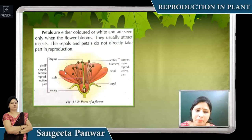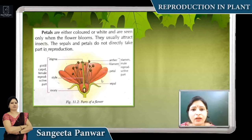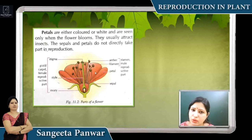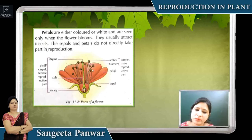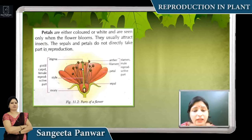Some other parts are known as sepals and petals. Sepals are the green colored portions. Petals are the colorful portions that usually attract insects. If all four parts — sepals, petals, stamen, and pistil — are present in one flower, it is called a complete flower. If sepals are absent or only one of male or female is present, it is called an incomplete flower.